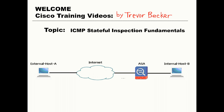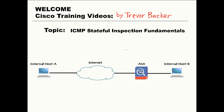As we've discussed in previous videos, the Cisco ASA Firewall is a stateful packet inspection device. This means that any type of traffic that traverses one of the firewall's interfaces is going to be statefully inspected. The problem with this, of course, is that all traffic is not stateful. ICMP is an example of that.